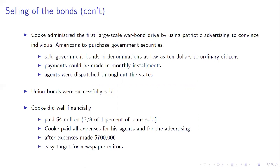Bonds are available in denominations as low as $10, with payments in monthly installments. Cook dispatches agents throughout the states. Union bonds are successfully sold far and wide to people all over the country. Very much unlike the War of 1812, where a small number of extremely wealthy individuals financed the war, most of these bonds are bought by small investors and are widely and dispersely held.